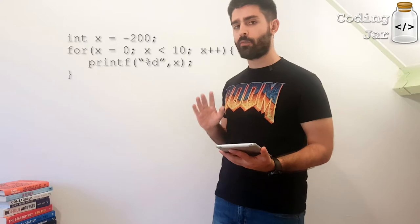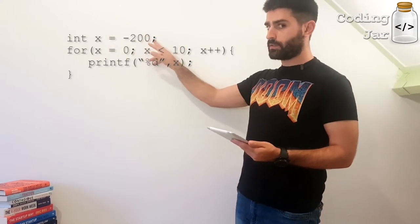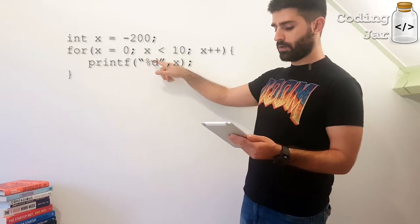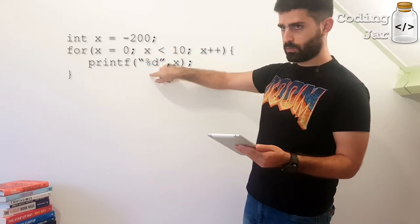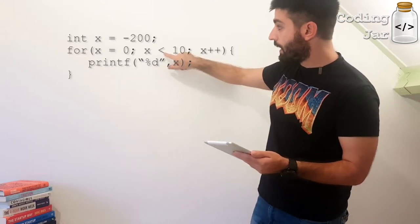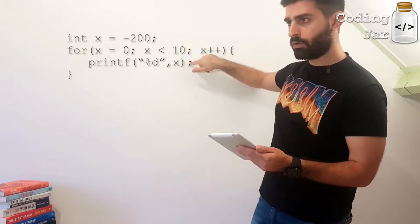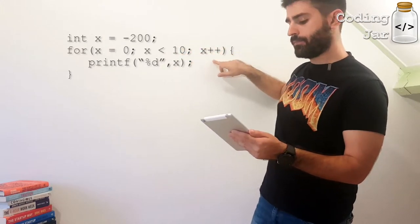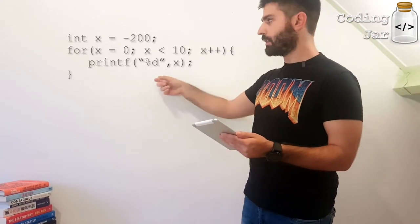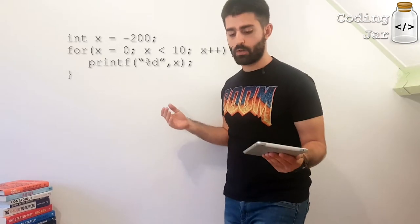So let's see an example of for, and then I will explain it to you. Int x equals minus 200. For x equals 0, semicolon, while x is less than 10, semicolon, x plus plus, and we define a block of code where we say, printf percent d x, so print x, the value of x.